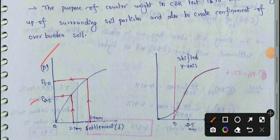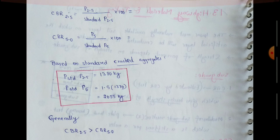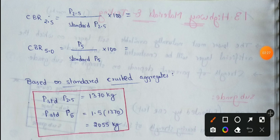From the test, we use P2.5 and P5.0 — that is, settlements of 2.5 mm and 5 mm. This graph will provide the CBR test graph. CBR values have two penetrations: CBR 2.5 and CBR 5.0. So we have two values. This is CBR 2.5 mm.